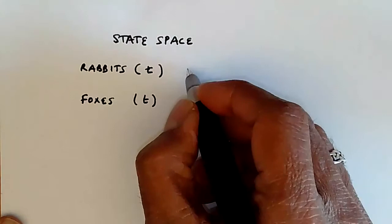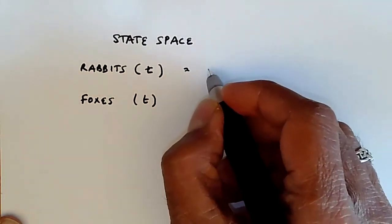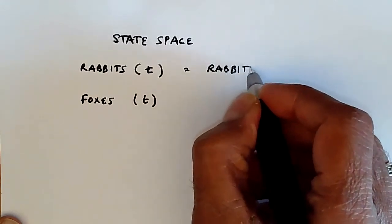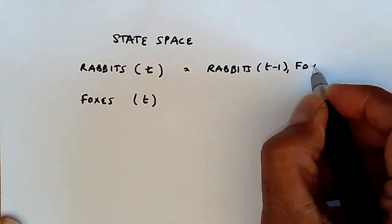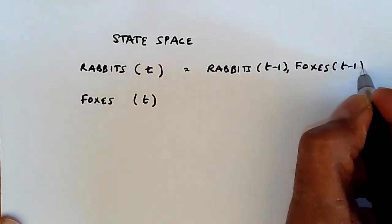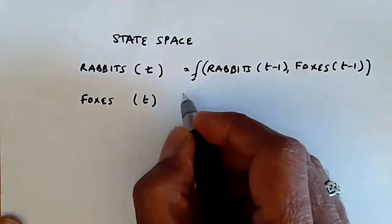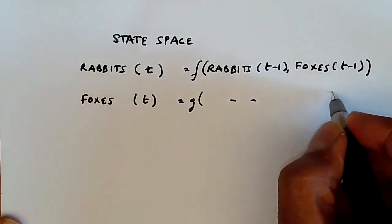The rabbits of t will depend on the previous value of the rabbits in time t minus 1, so rabbits t minus 1, and the number of foxes at time t minus 1. This is some function, let's just call this f. And similarly, foxes is some function g of these same values.